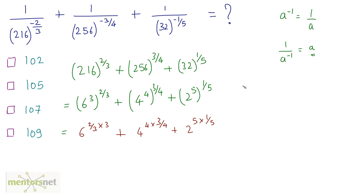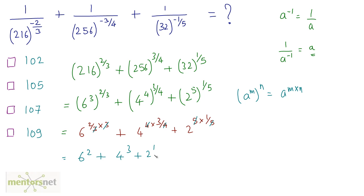Using the law a raised to m raised to n equals a raised to m times n: the 3s cancel giving 6 squared, the 4s cancel giving 4 cubed, and the 5s cancel giving 2 raised to 1. So 36 plus 64 plus 2 equals 102. The answer is option A.